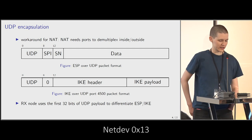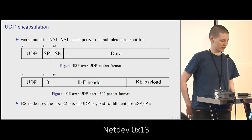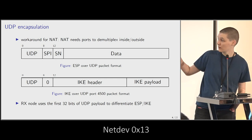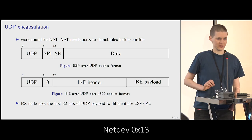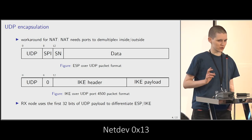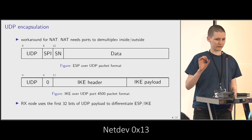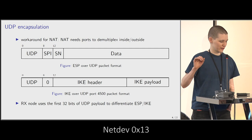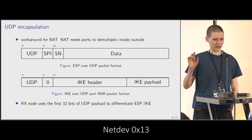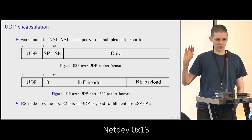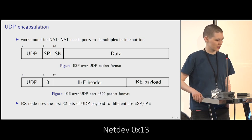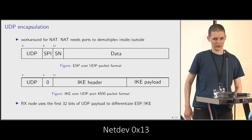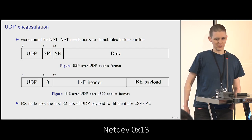When IKE is transported over UDP port 4500, they add a zero value called the non-ESP marker, used to differentiate whether what comes after the UDP header is IKE or ESP. If the four bytes after the UDP header are zero, then it's IKE and it goes to the IKE daemon in userspace. Otherwise, if it's not zero, then it's the SPI and that's used by the ESP implementation.